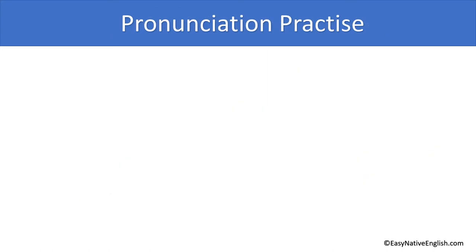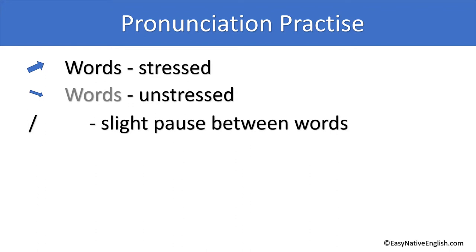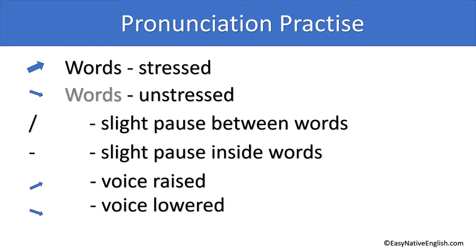Before we start, let's look at some annotation. The thick arrows with black words are stressed words. The thin arrows with greyed-out words are unstressed words. The slash represents a slight pause between words. The dash represents a slight pause inside the words. An arrow pointing up shows that the voice needs to be raised. An arrow pointing down shows that the voice needs to be lowered. And an arrow that goes straight across shows that the voice remains even.